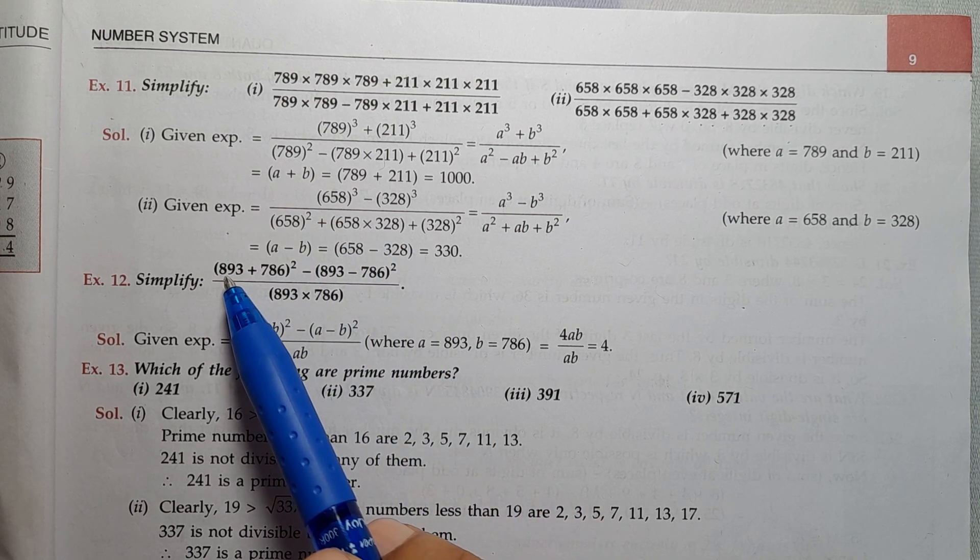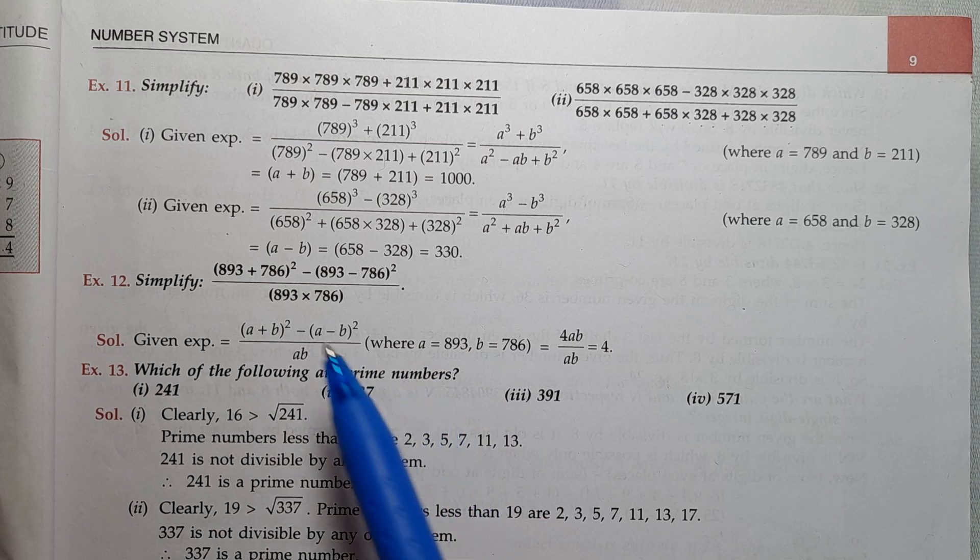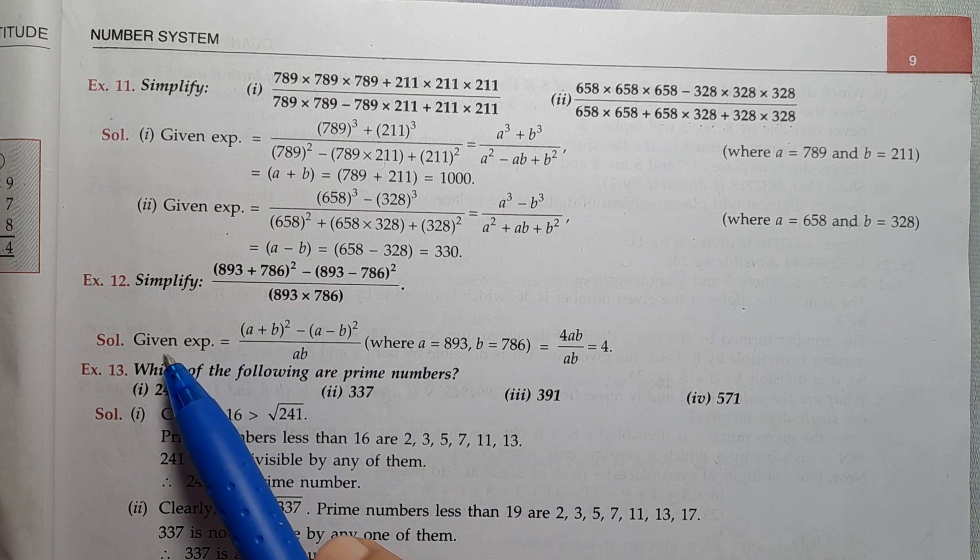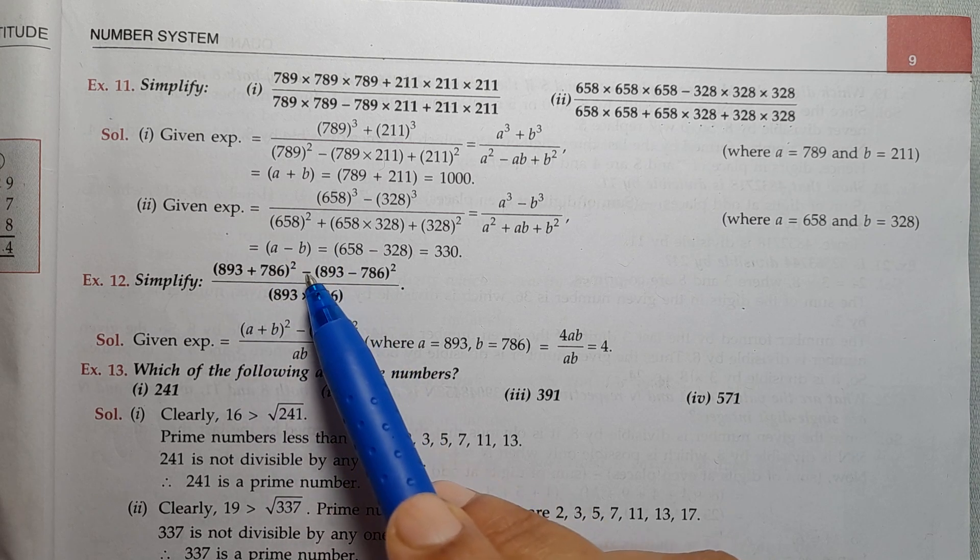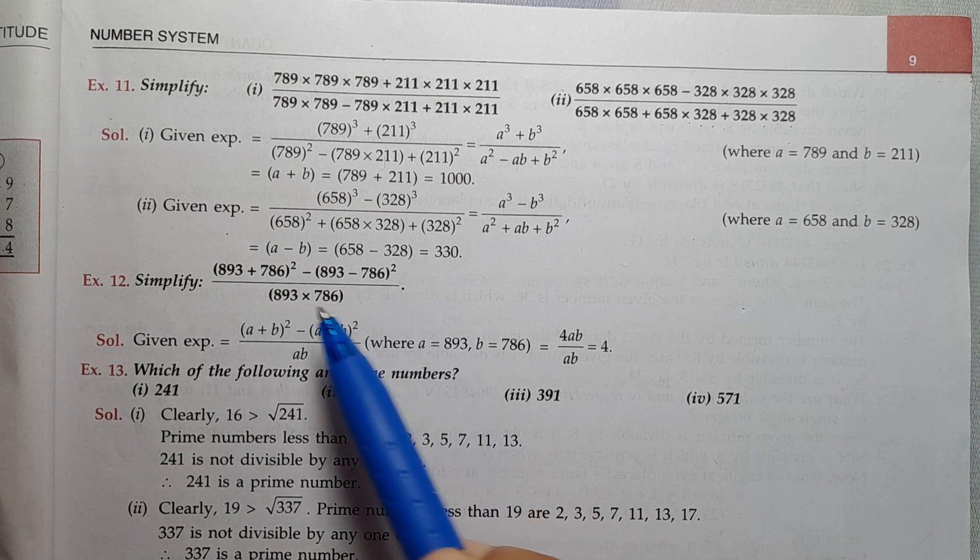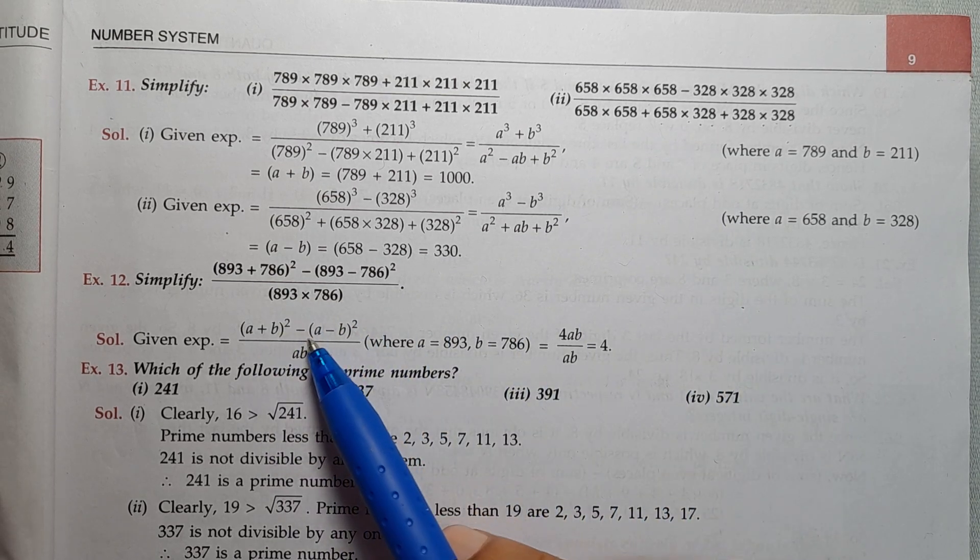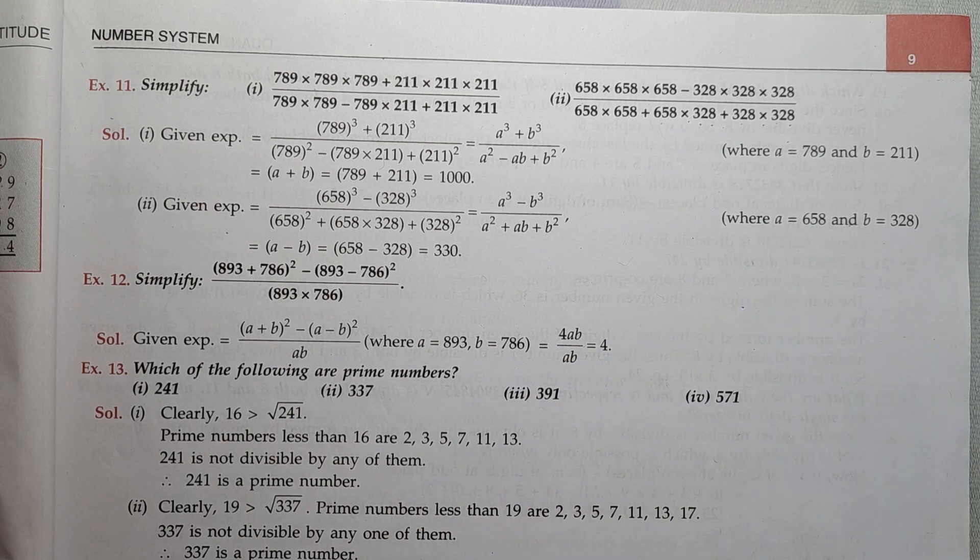So, let A be 893 and B is 786. The given expression is (A + B)² minus (A - B)² divided by AB. So, (A + B)² minus (A - B)² is 4AB divided by AB.